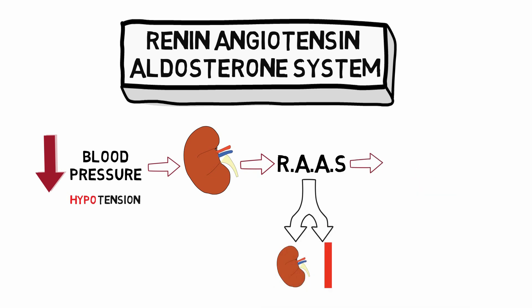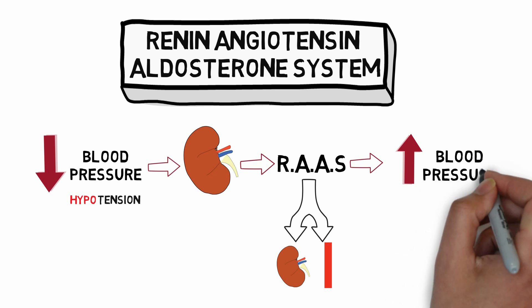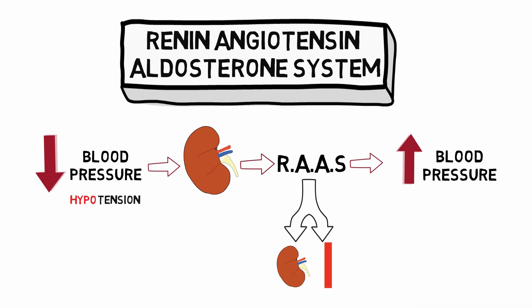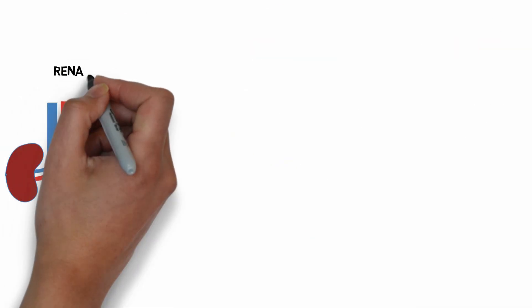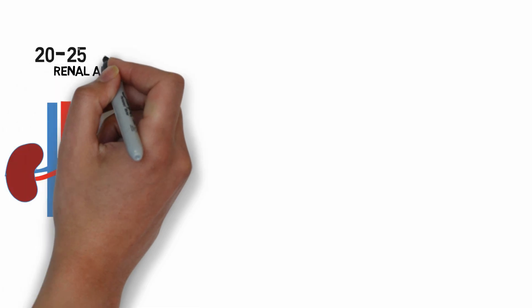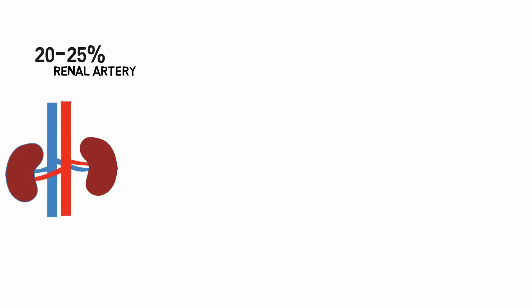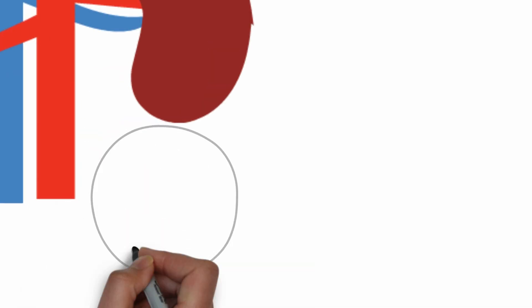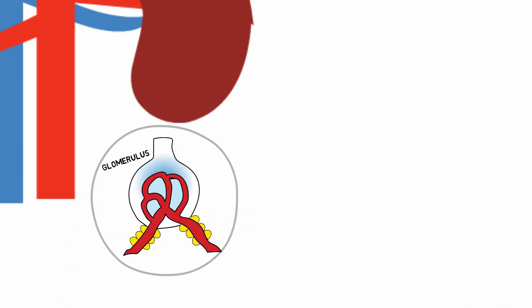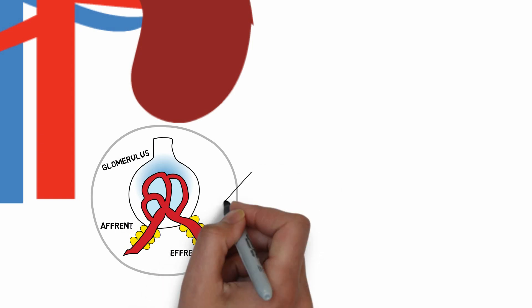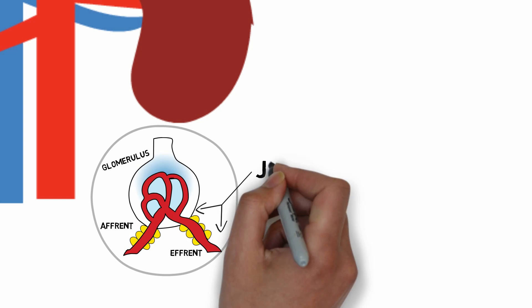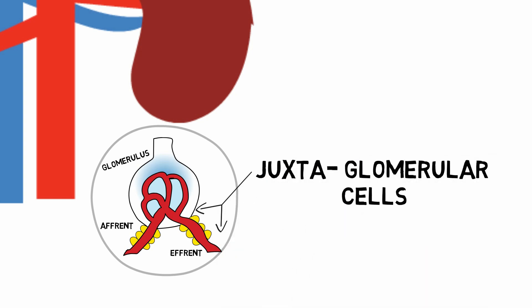Most of you know the kidneys are supplied by a set of renal arteries which supply almost 20 to 25% of whole cardiac output to the kidneys. This blood reaches the glomeruli through the afferent arterioles and leaves the glomeruli through the efferent arterioles.